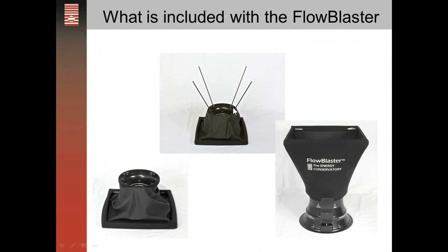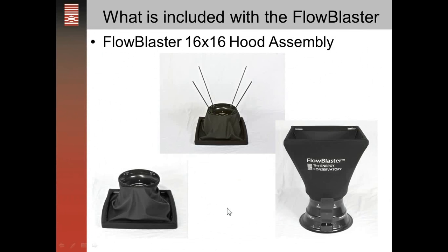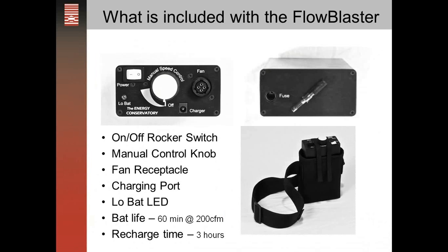There are four poles that you put in to assemble the 16 by 16 hood. The battery-powered speed controller has an on/off rocker switch and a manual control knob where you can control it manually. If you're using the cruise function, then you click it to off. It has a fan receptacle that the coil cord attaches to, connecting the controller to the fan. The charger plugs in at the top, and there's a low battery light. On the bottom there's a fuse slot, and a carrying case with a strap that can be used either as a belt or a harness over your shoulder.